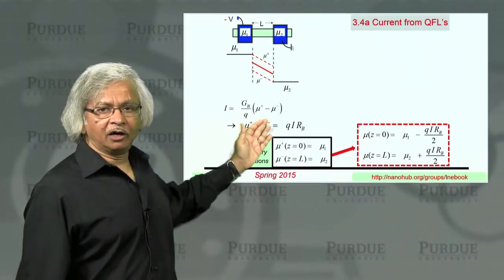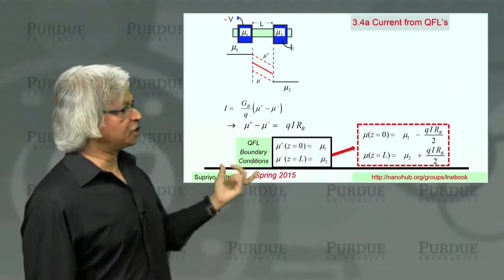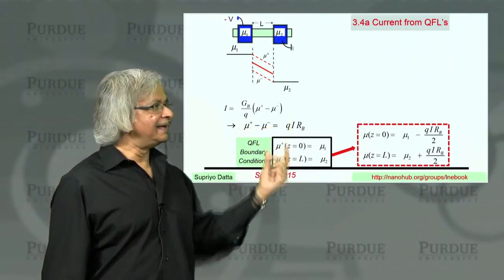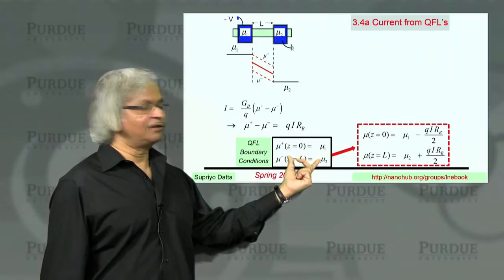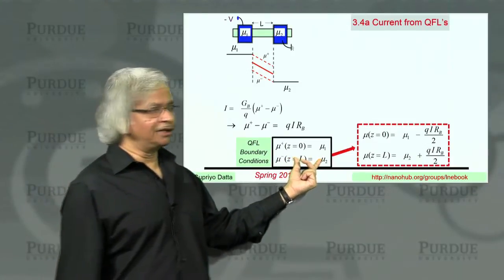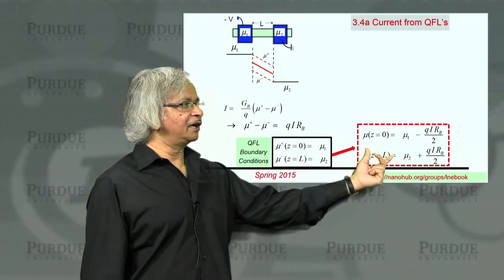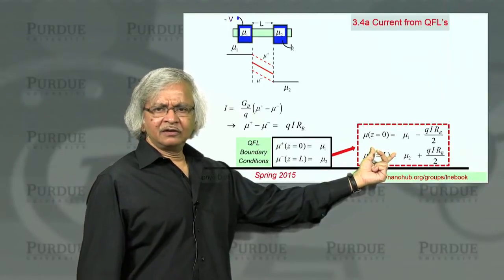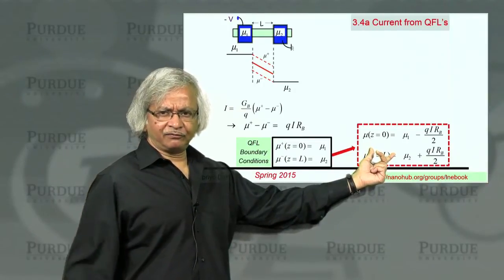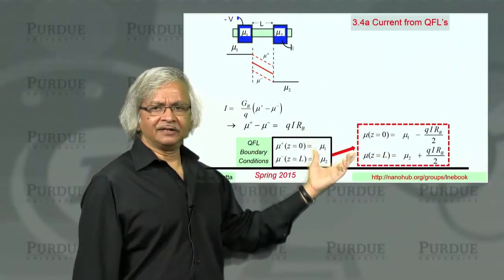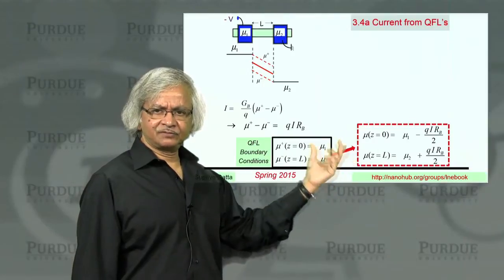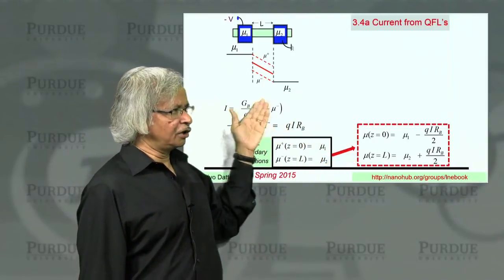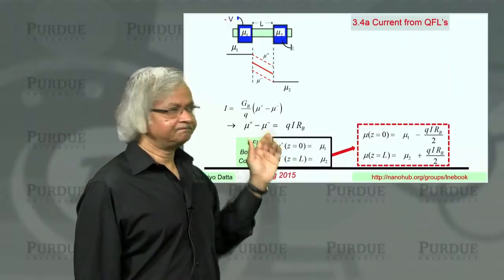We'll try to explain where this comes from in the next slide. But before going on, I just wanted to show that if you accept this, then these quasi-Fermi level boundary conditions give you the boundary conditions for mu quite straightforwardly — it just takes a couple of algebraic steps.